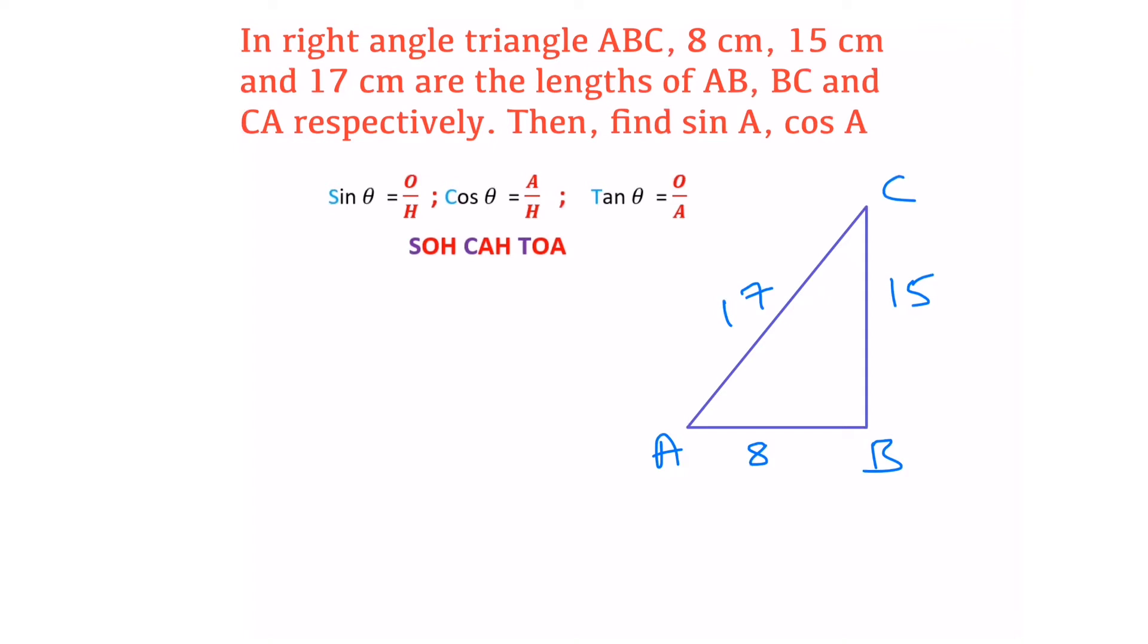So suppose angle B is 90 degrees. Now we have to find sine A and cos A. With respect to these angles, sine A equals sine theta.